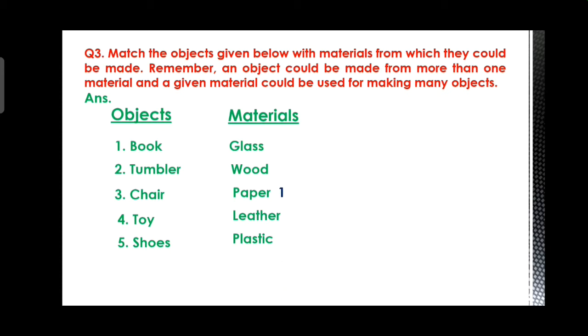The correct table is shown as below. Objects: book - material is paper. Tumbler - material is glass and plastic. Chair - material is wood and plastic. Toy - material is plastic and wood. Shoes - material is leather.